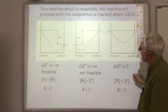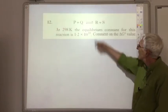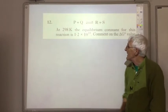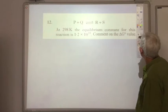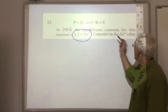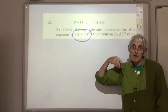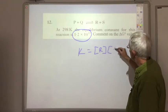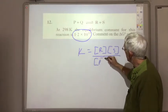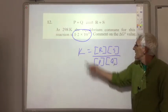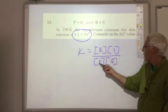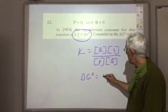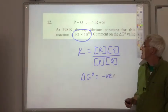Here's something that could appear in an exam question. It gives you a reversible reaction, P plus Q reacting to give R plus S. It says that at 298K, the equilibrium constant for this reaction is 1.2 times 10 to the 10. Comment on the delta G-naught value. A very big equilibrium constant. Remember, the equilibrium constant is the concentration of products — R and S — over the concentration of the reactants — P and Q. A very big number means a high concentration of products and a low concentration of reactants. So that means the delta G-naught value will be negative, meaning this equilibrium reaction is feasible.